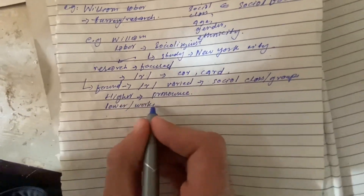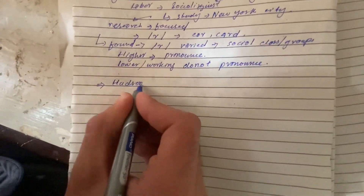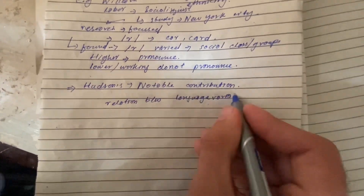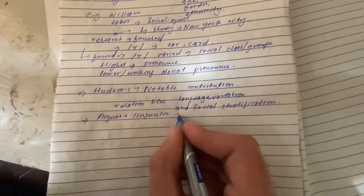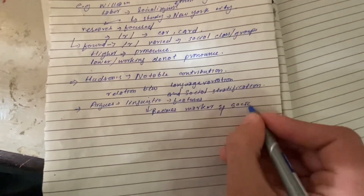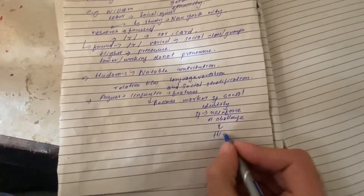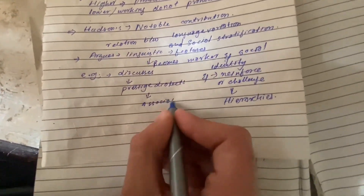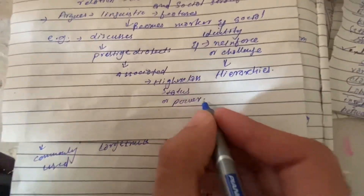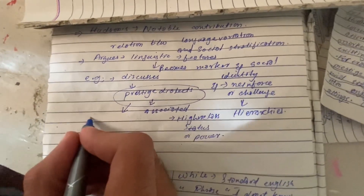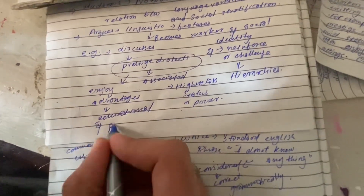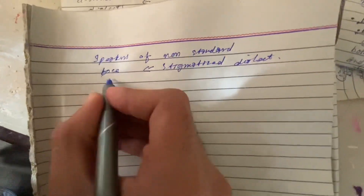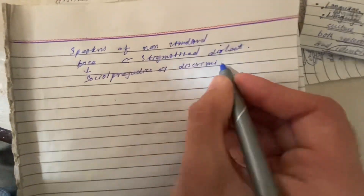Hudson's notable contribution is his exploration of the correlation between language variation and social stratification. He argues that linguistic features often become markers of social identity and can reinforce or challenge existing social hierarchies. For example, Hudson discusses the phenomenon of prestige dialects, which are associated with higher social status or power. Speakers of prestige dialects often enjoy advantages in educational or professional settings, while speakers of non-standard or stigmatized dialects may face social prejudice or discrimination.